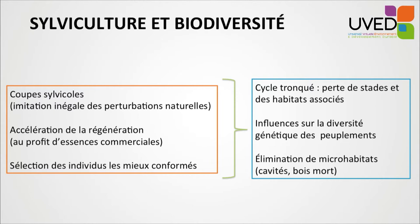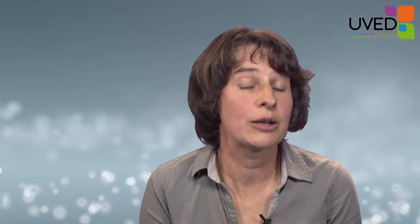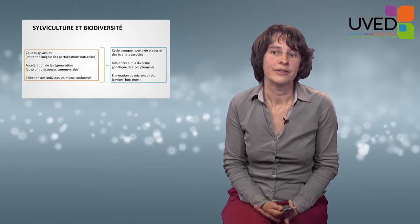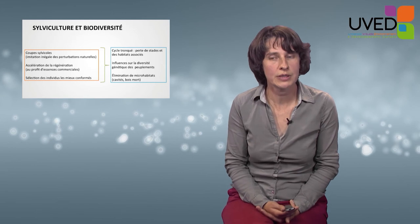This leads to a number of consequences. First, the cycle is cut short and some stages are lost — such as the initial and final stages — and therefore a number of species that match those stages are also lost. Additionally, these management practices influence genetic diversity because open spaces and thinning counterbalance natural selection. In managed forests, there are far fewer microhabitats such as cavities, dead wood, or bark becoming detached from the trunk. Trees carrying microhabitats are eliminated because they are not commercially valuable or are too old, so animal species which need these microhabitats and are typically forest species are less abundant in managed forests.